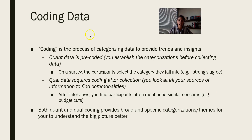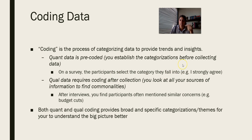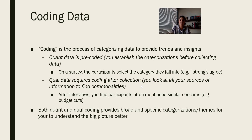Categories and data are all about providing trends and insights, and it depends on the type of data you have. Quantitative data is typically going to be pre-coded because you're establishing categories before you collect it. On a survey, participants select 'strongly agree,' 'disagree,' 'neutral,' 'moderately agree,' so it's already coded. When you run your data through SPSS or Excel, you know this one's a seven, this one's a three, etc. Qualitative data requires coding after or as you are collecting it.